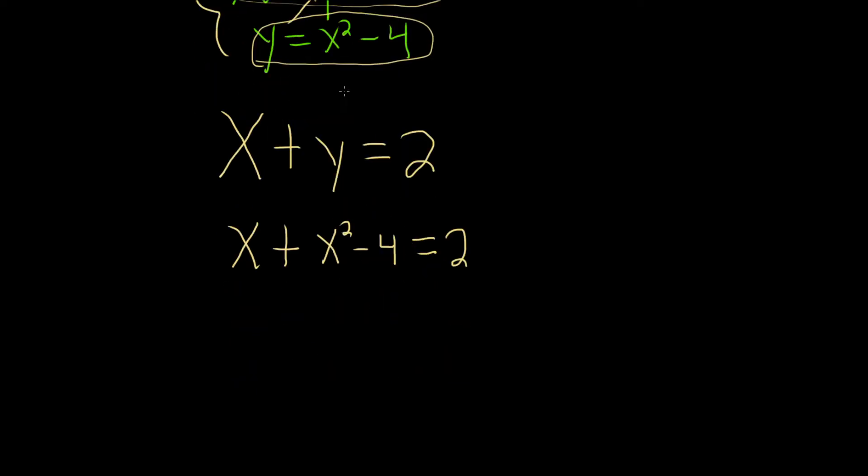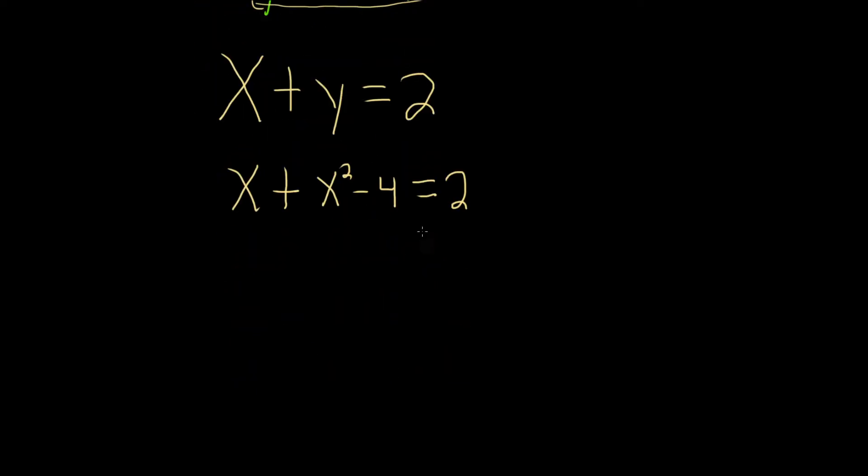Now this is a quadratic equation, so we should try to set it equal to 0 and factor. So subtract 2 from both sides. We have x plus x squared minus 6 equals 0. So that looks really weird. Let's write the x squared first. This is x squared plus x minus 6 equals 0.